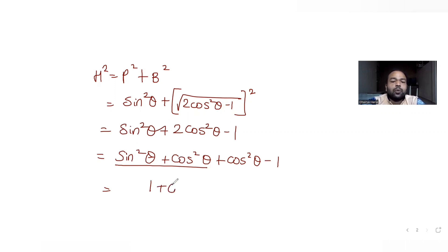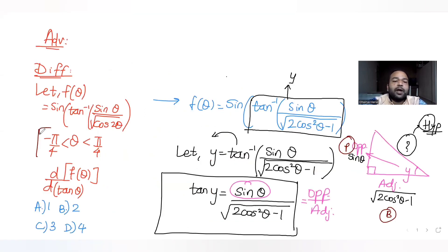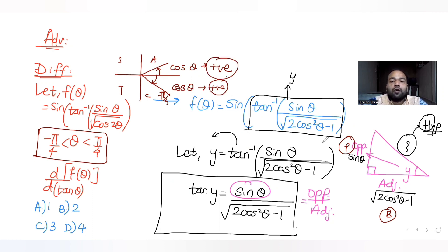So hypotenuse² = cos²θ, giving hypotenuse = cosθ. We use positive cosθ here because θ lies between −π/4 and π/4. In the first quadrant (0 to π/4), cosθ is positive, and in the fourth quadrant (0 to −π/4), cosθ is also positive. So the hypotenuse comes out as cosθ.